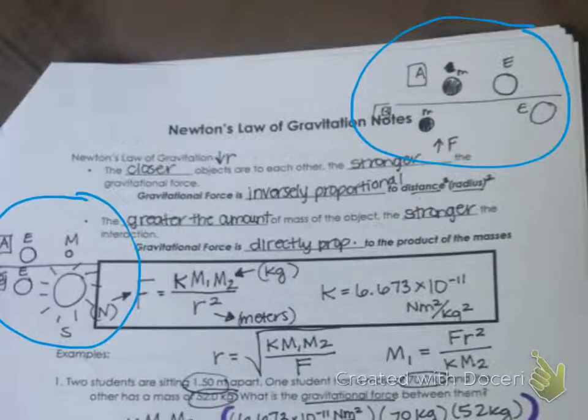They talk to their partner and figure out that in B, it's going to be greater because there's greater mass. So force and mass are directly proportional.